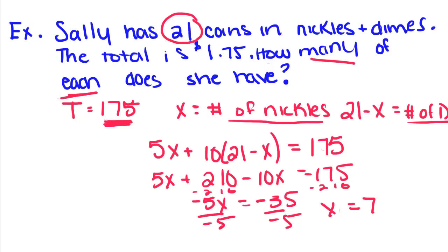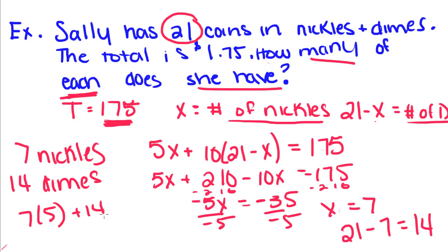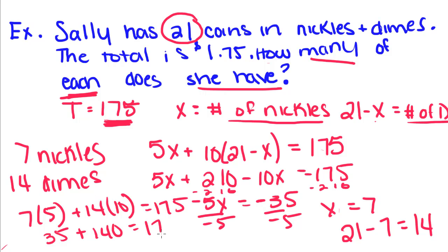This question asks how many of each does she have. We got X equals 7, and X is the number of nickels, so she has 7 nickels. And 21 minus X is the number of dimes: 21 minus 7 equals 14, so she has 7 nickels and 14 dimes. You can always check your work: 7 times 5 plus 14 times 10 — that's 35 plus 140 — equals 175. Since 175 equals 175, you know your answer is correct.